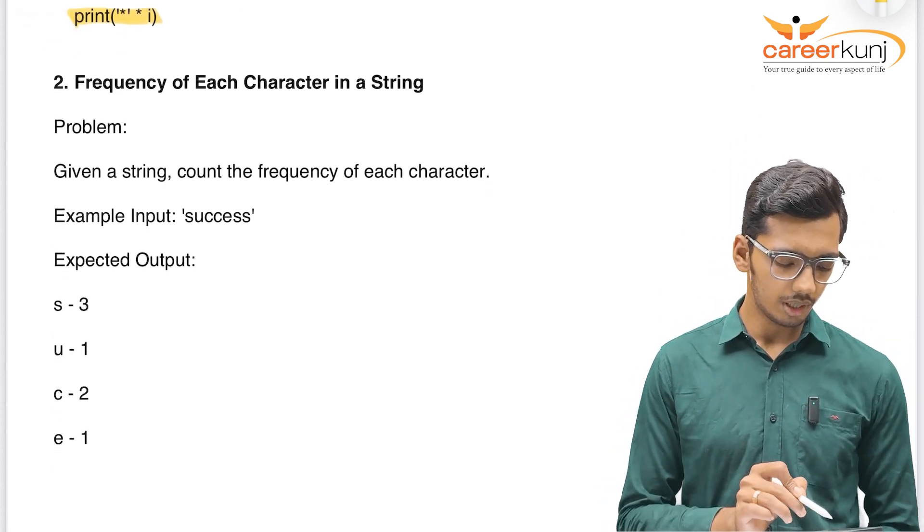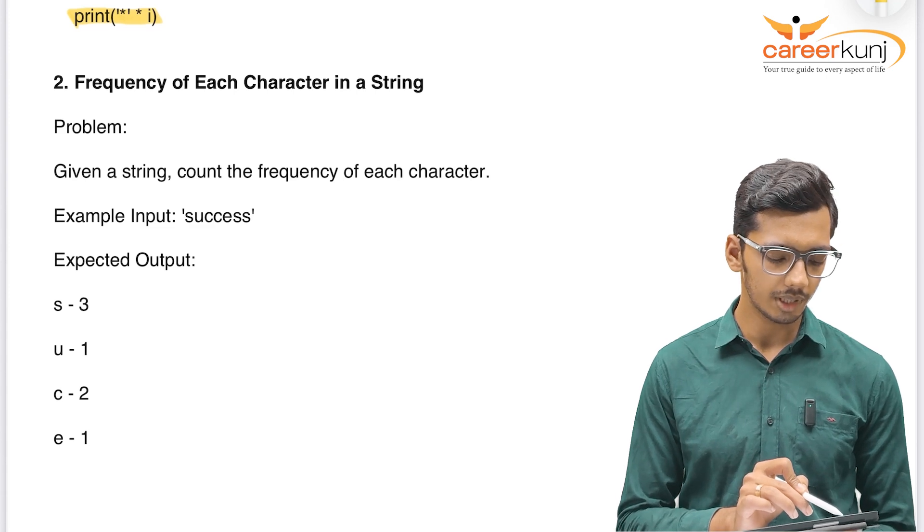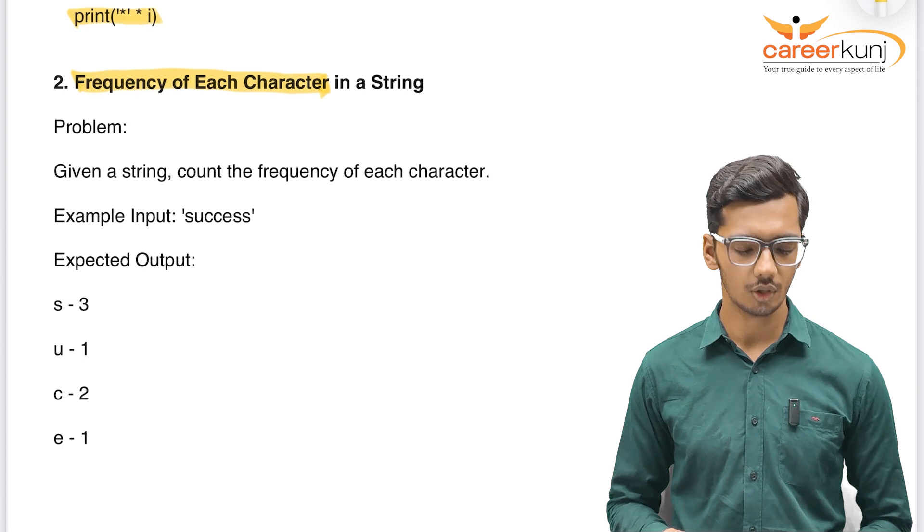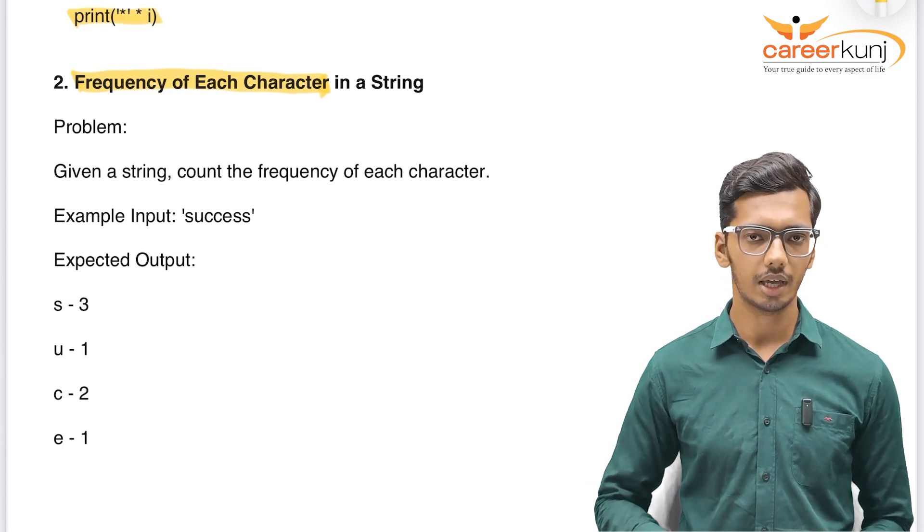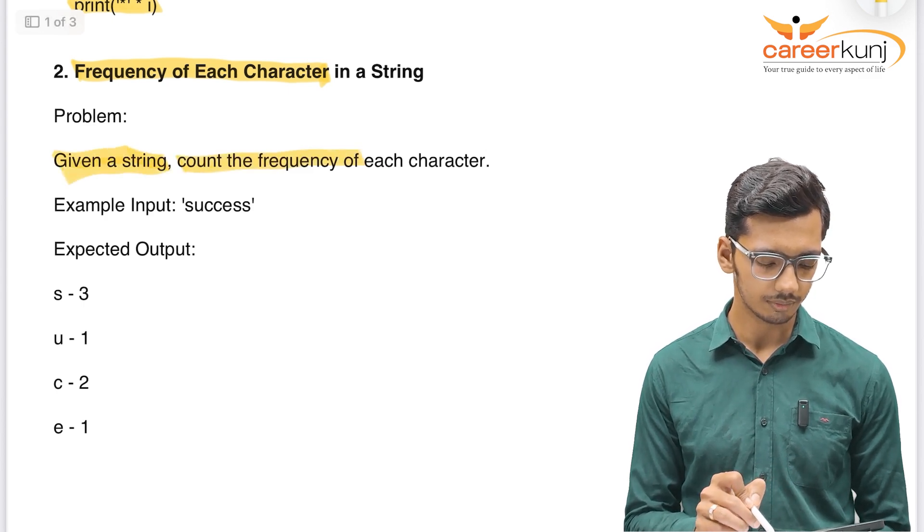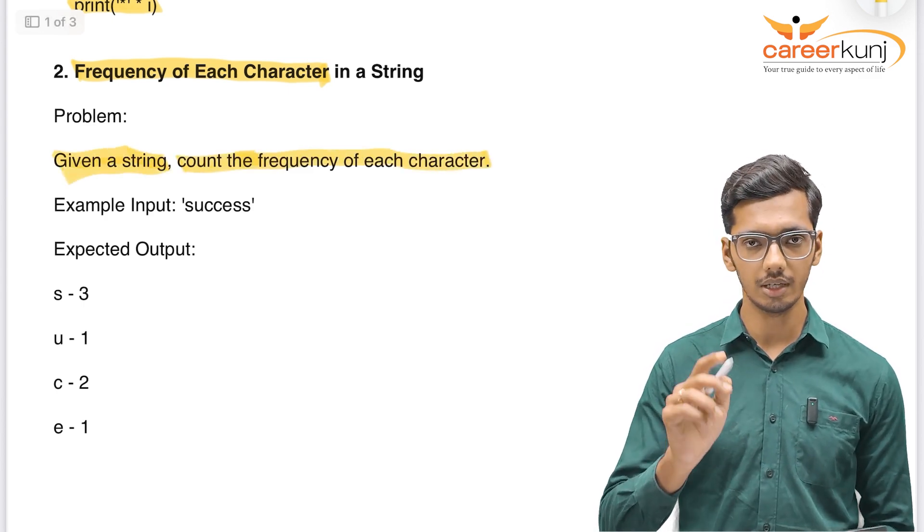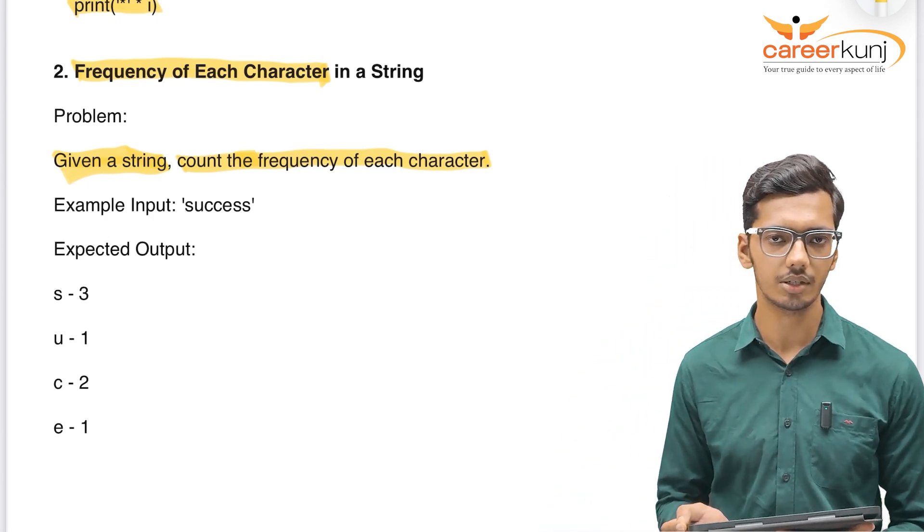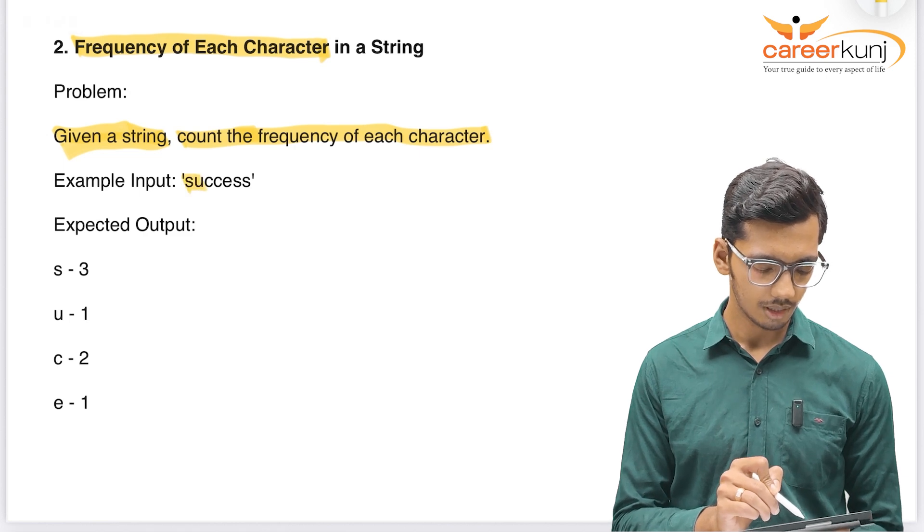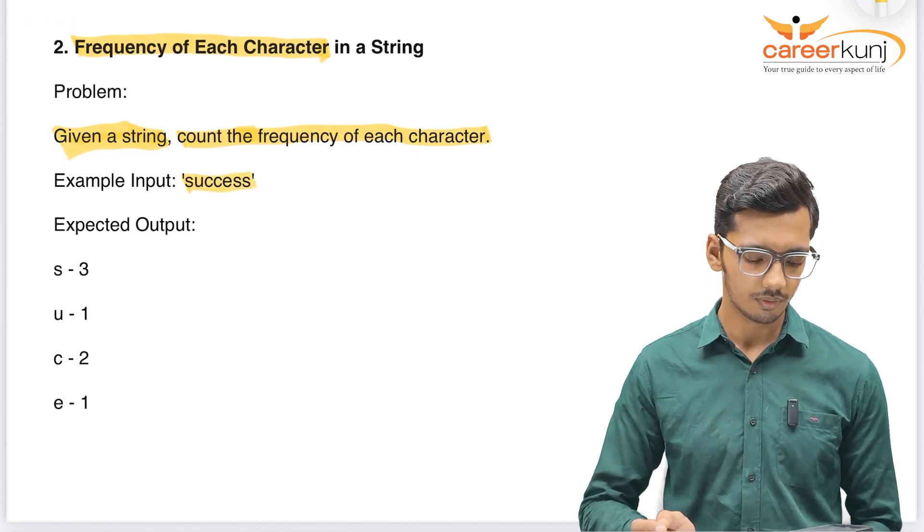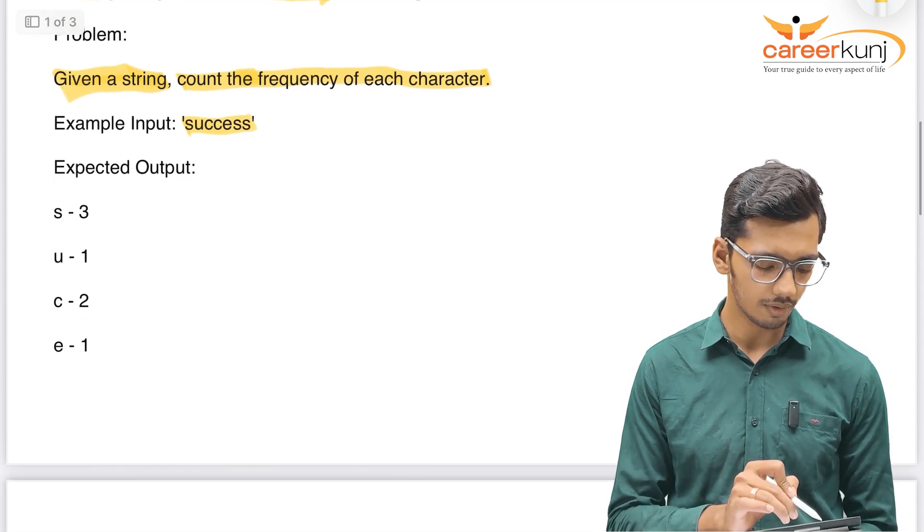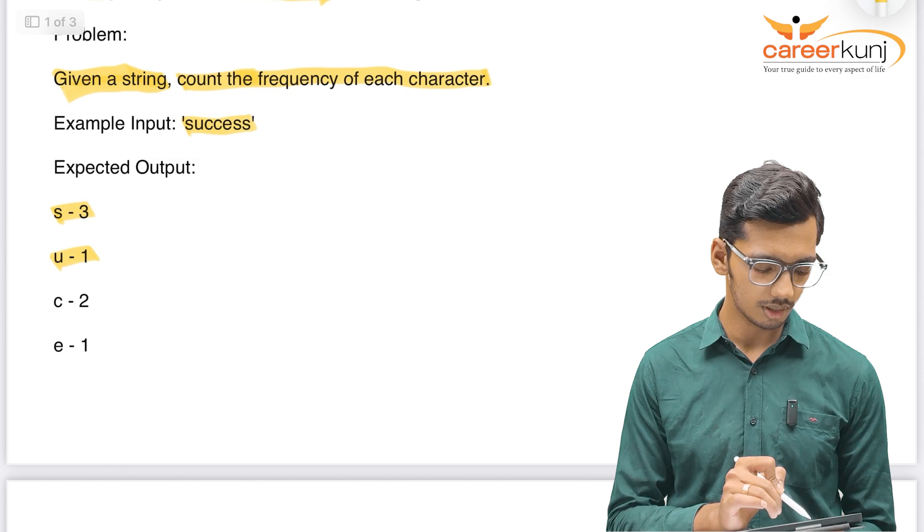This question can be asked for TCS prime ninja as well as digital cadet to determine the frequency of each character. The question can be different. Sometimes you might be asked about the frequency of character or the second occurrence of the character. The problem is if given a string, we have to count the frequency of each character. For example, I will take input as success because I have three letters which occurred only one time, two letters that occurred two times. Then expected output is, if I print success, it should have S as three, U as one, C as two and E as one.